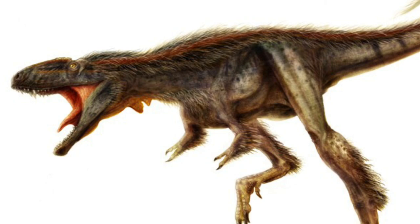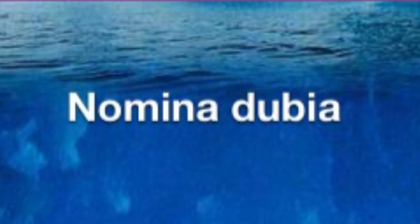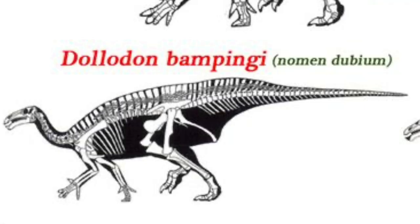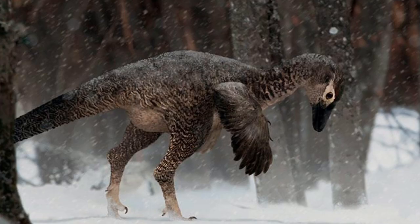Nomina Dubia. These are words describing fossils with no unique diagnostic features, making these fossilized species doubtful. If a species is a nomen dubium, it may be lumped into a valid genus. For example, the dubious Troodon is probably Stenorhynchosaurus, which is valid.